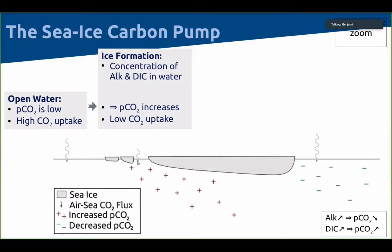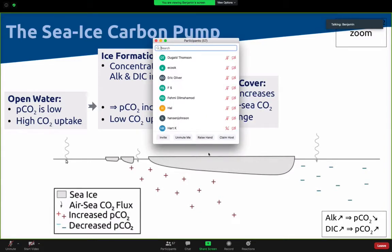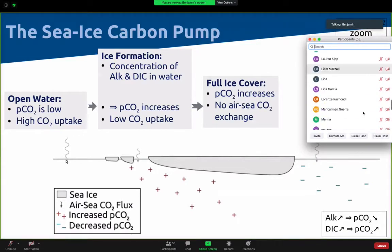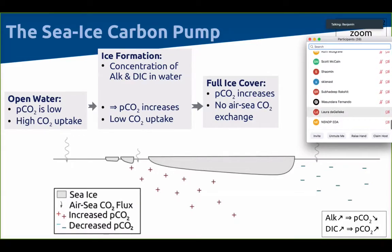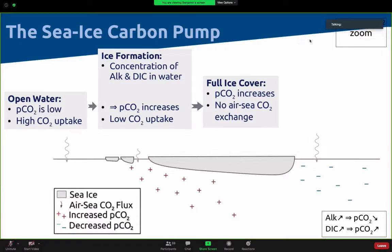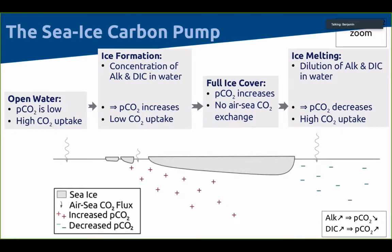Then ice fully forms and totally blocks any exchange between the atmosphere and the ocean. The pCO₂ keeps increasing as the ice keeps thickening, but there's no potential exchange with the atmosphere anymore. Then spring comes, the ice melts, inputting fresh water that dilutes alkalinity and DIC, decreasing pCO₂ and leading to high CO₂ uptake.